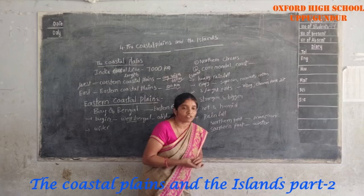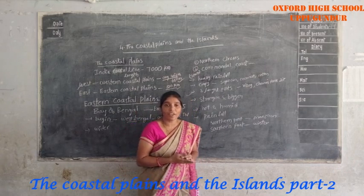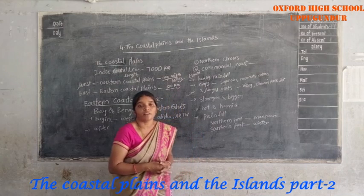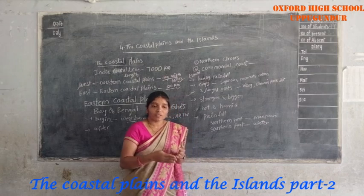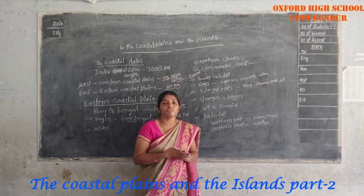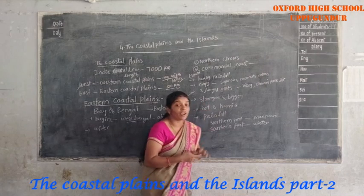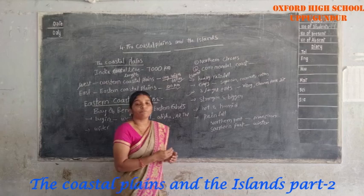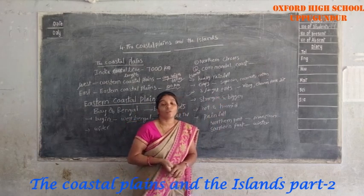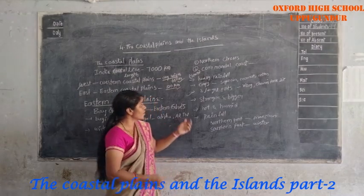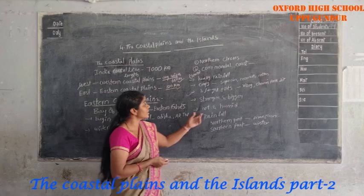In the Eastern Coastal Plains, the sea waves are stronger and bigger compared to the Western Coastal Plains. The sea plains are very rough. The climate of these coastal plains is very hot and humid.